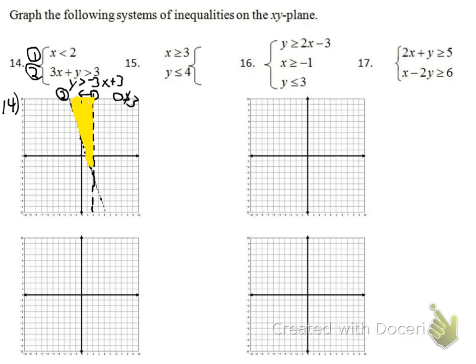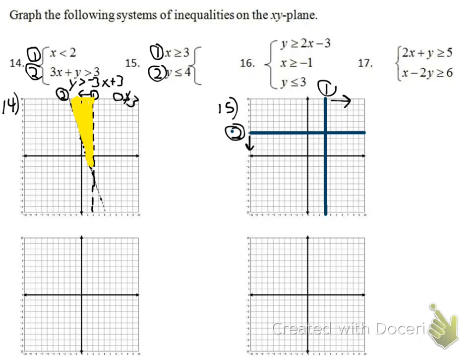Number 15: x ≥ 3 is a solid vertical line (equal to included), shading to the right. y ≤ 4 is a solid horizontal line, shading below. The solution region is the bottom-right corner where both conditions are satisfied. Solid lines are used because these inequalities include the equal-to case.